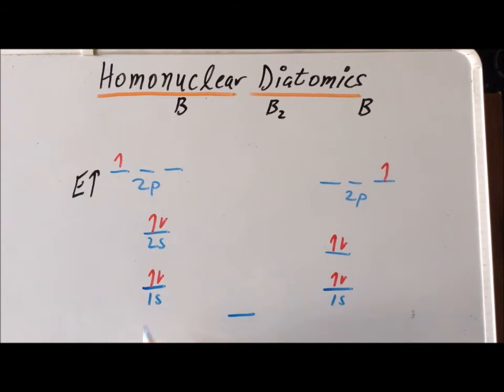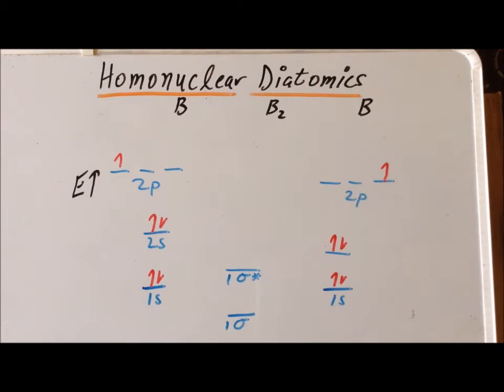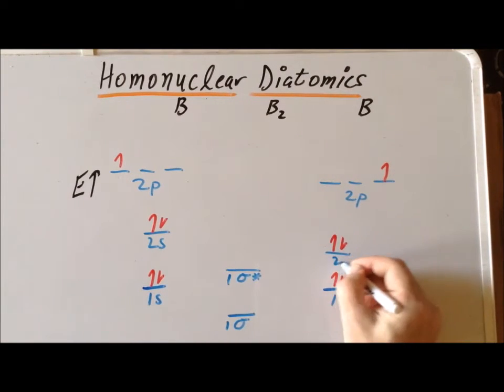You already know about the 1s combination: we get a lower energy bonding combination called sigma and a higher energy antibonding combination called sigma star. We often give them a prefix of 1. The same situation occurs with the 2s orbitals.